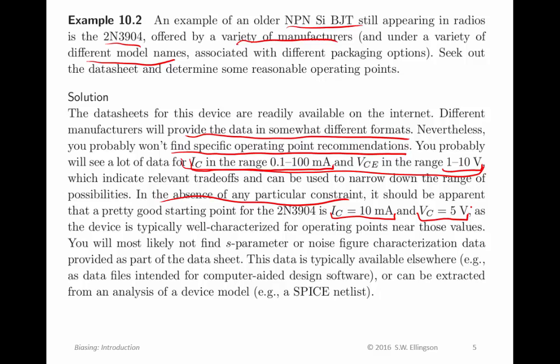That's arbitrarily chosen but it's mid-range in terms of the collector current and collector emitter voltage, so it's a reasonable starting point. And if you find there's something not satisfactory about that, you can always change those values within this range. You most likely will not find S-parameter or noise characterization data as part of the data sheet for this transistor. This data is typically available elsewhere, so you can find data files intended for computer-aided design software or you can extract the S-parameters from analysis of the device model, for example a SPICE netlist.